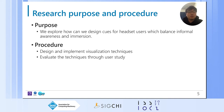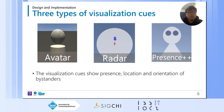Our approach was to appropriate existing visualization cues that provide awareness, and to evaluate them through a combined simulation and user hybrid study. Here are the three we created, each of which focuses on showing presence, location, and orientation of bystanders around the headset user, which are basic informal awareness elements.